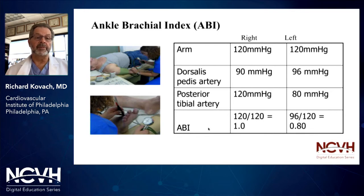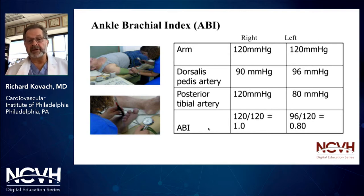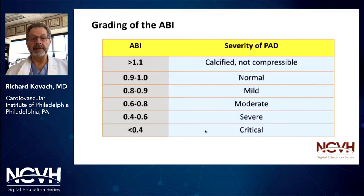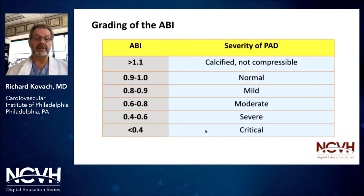Let's start with the most simple and basic test we can do in the office: the ankle brachial index — basically the blood pressure in the ankle divided by the blood pressure in the arm. A normal ABI is typically 1 to 1.1. Less than 0.9 is mild disease; 0.6 to 0.8, moderate disease suggested; 0.4 to 0.6, severe disease suggested; and less than 0.4, critical limb ischemia suggested.